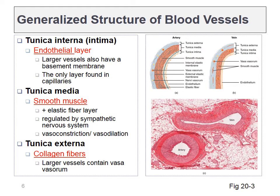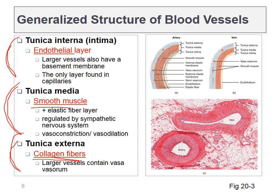Arteries and veins contain the same three layers. There's an outer layer called the tunica externa — mostly connective tissue full of collagen fibers that will be very important in today's lecture. The middle layer is called the tunica media, and this is mostly smooth muscle. The innermost layer is a layer of simple squamous epithelial cells, and these cells are so special that they get their own name: the endothelia. These cells produce a lot of hormones and are involved in blood clotting and blood pressure.